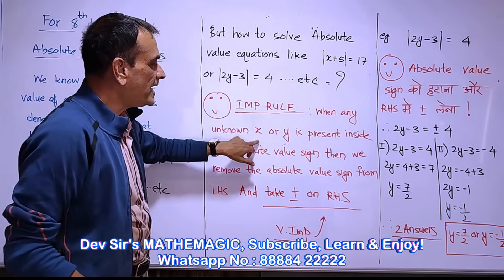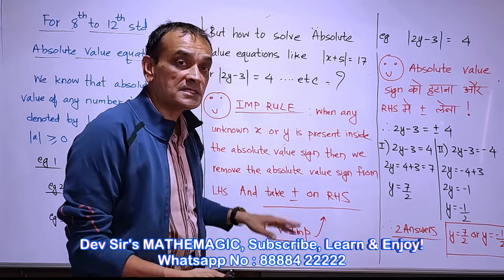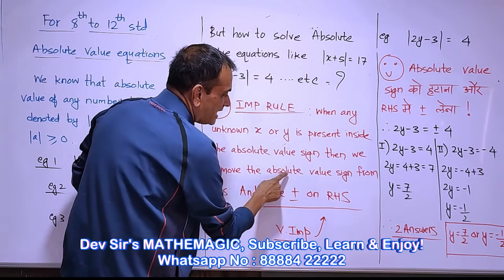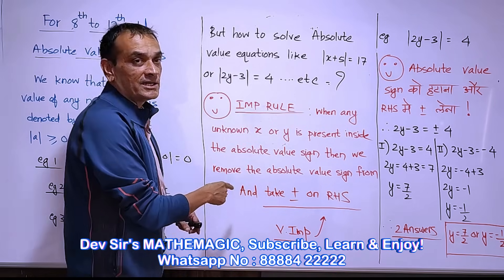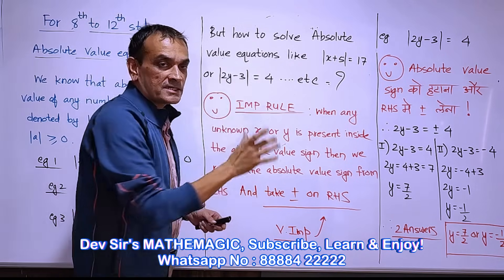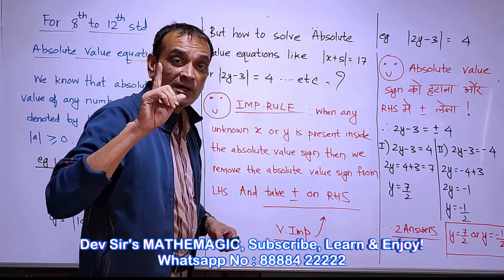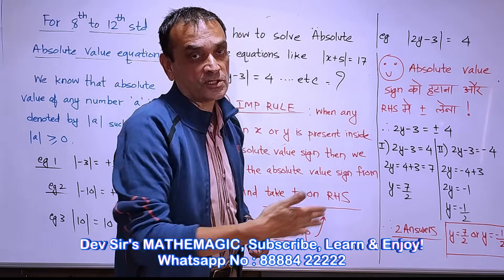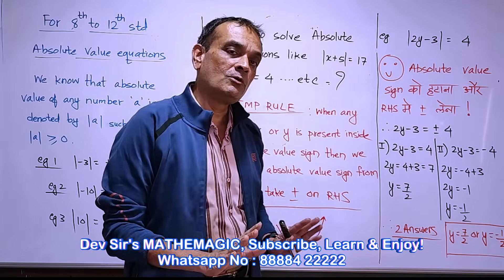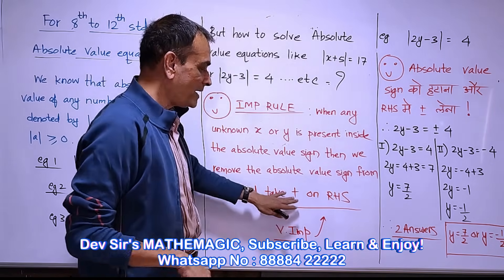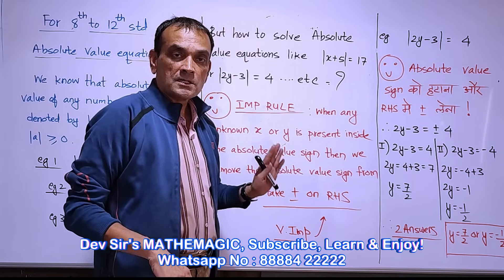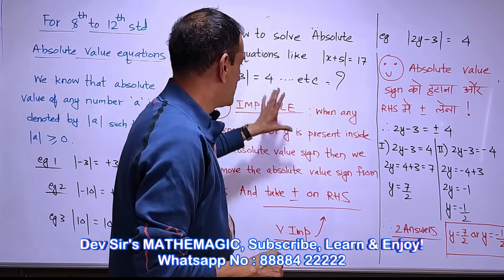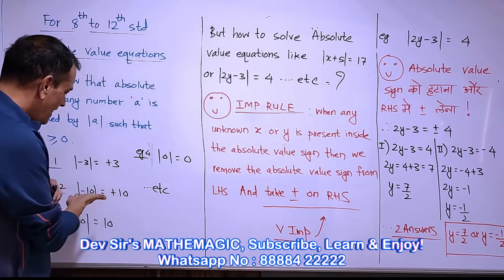When any unknown x or y is present inside the absolute value sign, remove the absolute value sign from the left-hand side, but do one very important thing: take plus or minus on the right-hand side. That is the rule. You will get two answers because of plus or minus. This rule is employed only when there is an unknown inside.